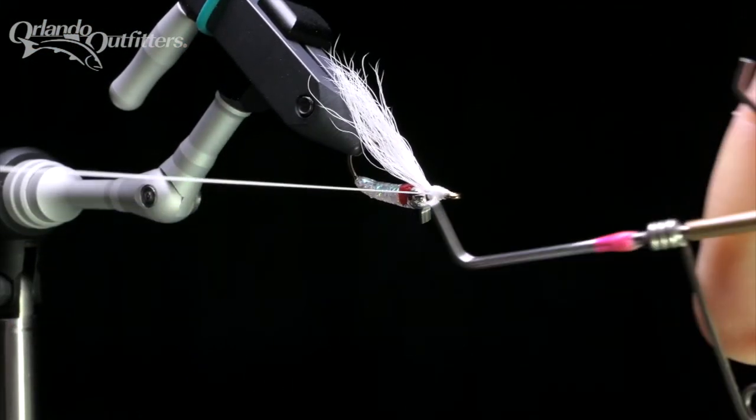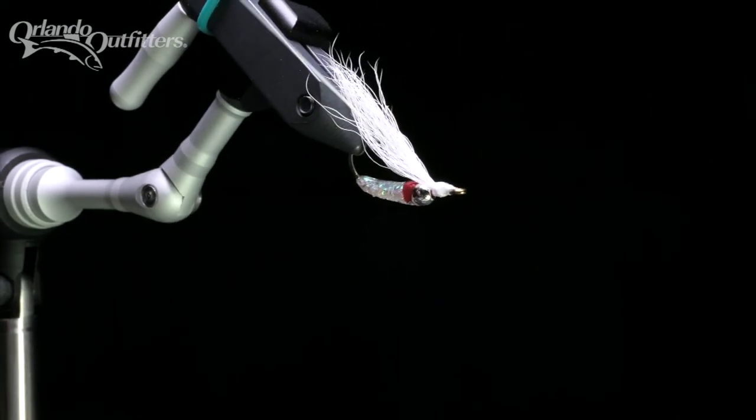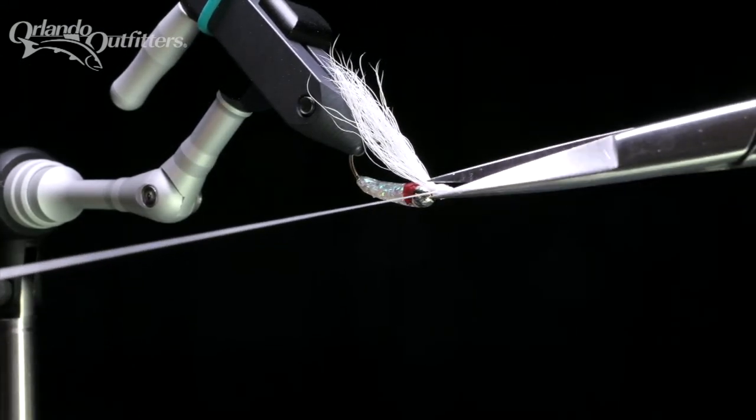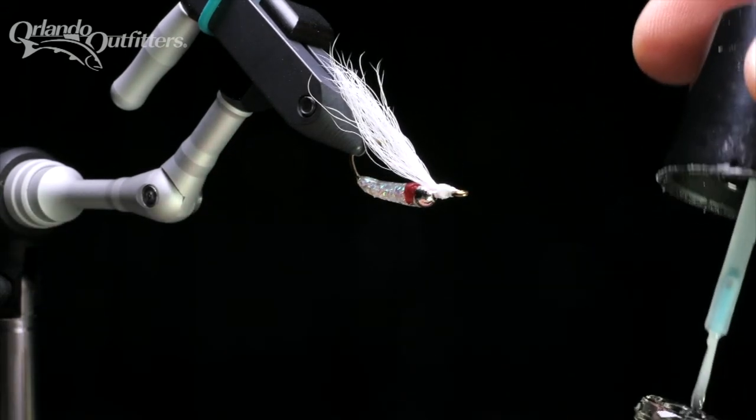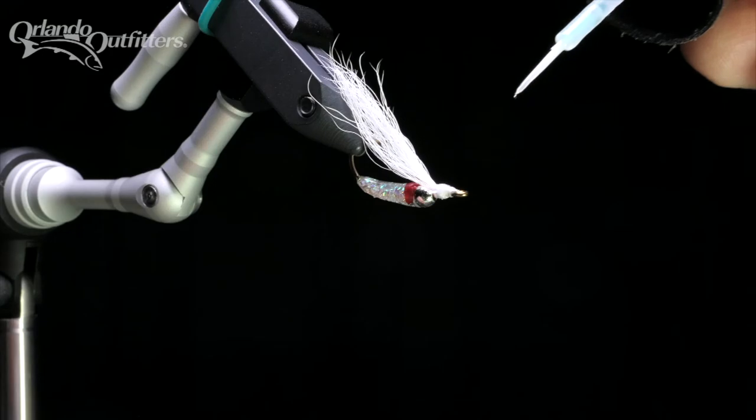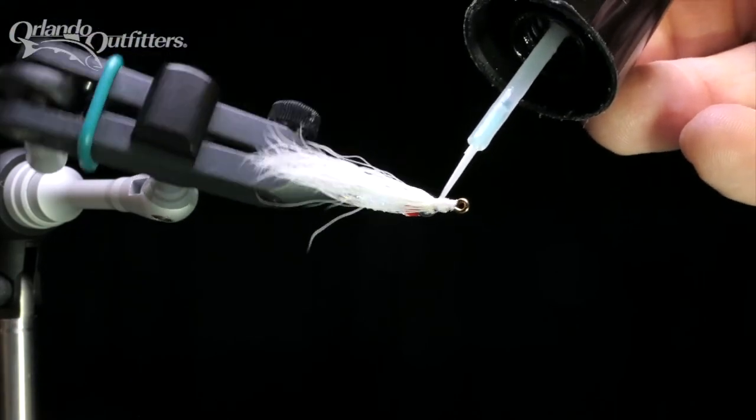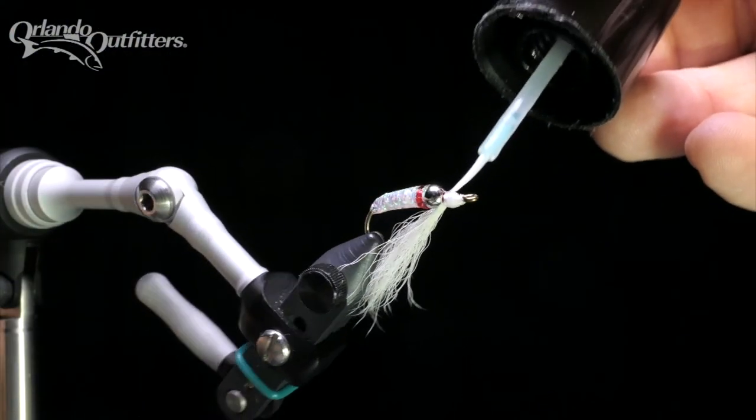Whip finish once or twice. I prefer to use a couple of 4 or 5 turn whip finishes. Trim the thread, then finish with head cement. Since I've already used Solarez resin for the body of the fly, Solarez Ultra Thin Bone Dry seems like an ideal choice.